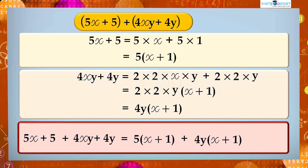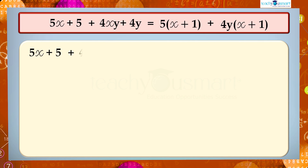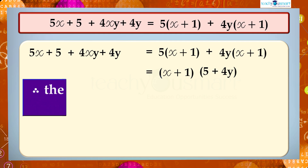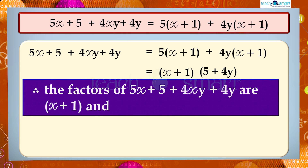Here we can see that (x + 1) is a factor common to both these terms. That is, 5x + 5 + 4xy + 4y equals 5(x + 1) + 4y(x + 1). Now the given expression is in irreducible form and the factors are (x + 1) and (5 + 4y).